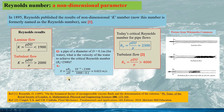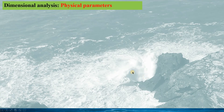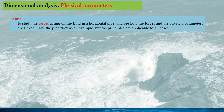Therefore, this is why most of the flows we see are turbulent flows. To understand the meaning of Reynolds number, it is important to examine the fluid forces, and then we will see how the fluid forces and the Reynolds number are linked. Here we take the pipe flow as an example, but the principles used here are applicable to all problems.